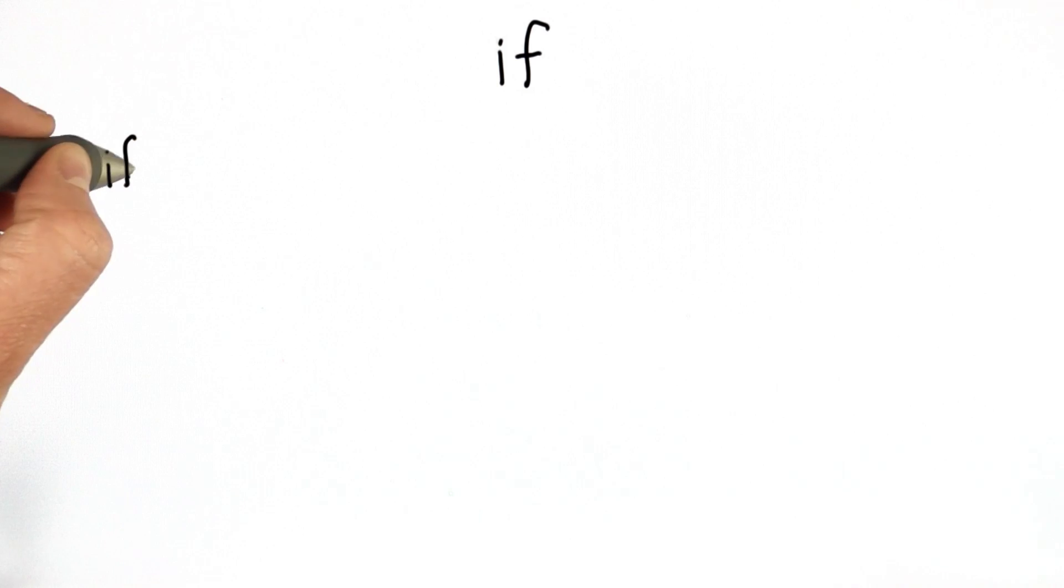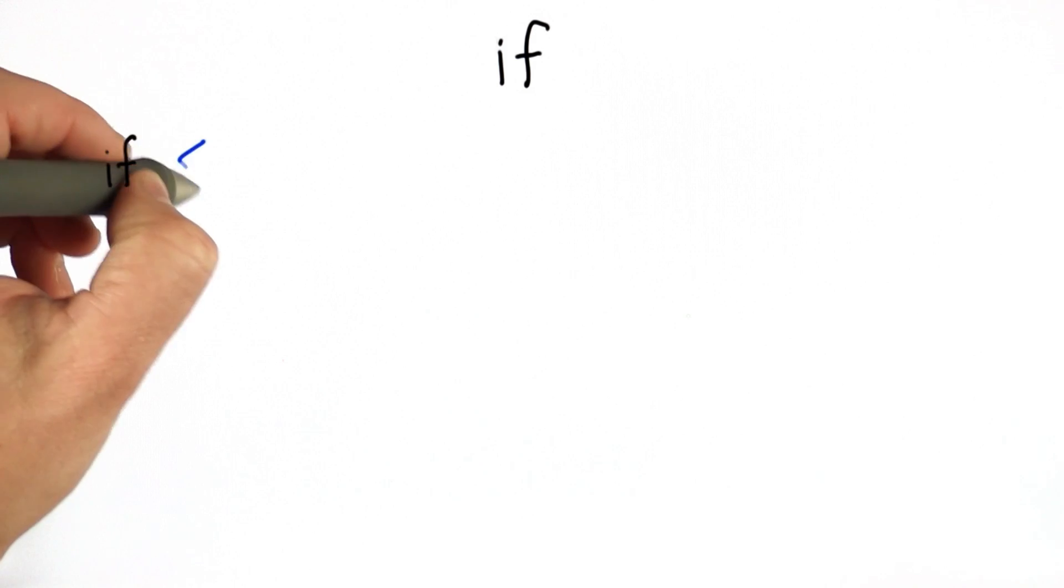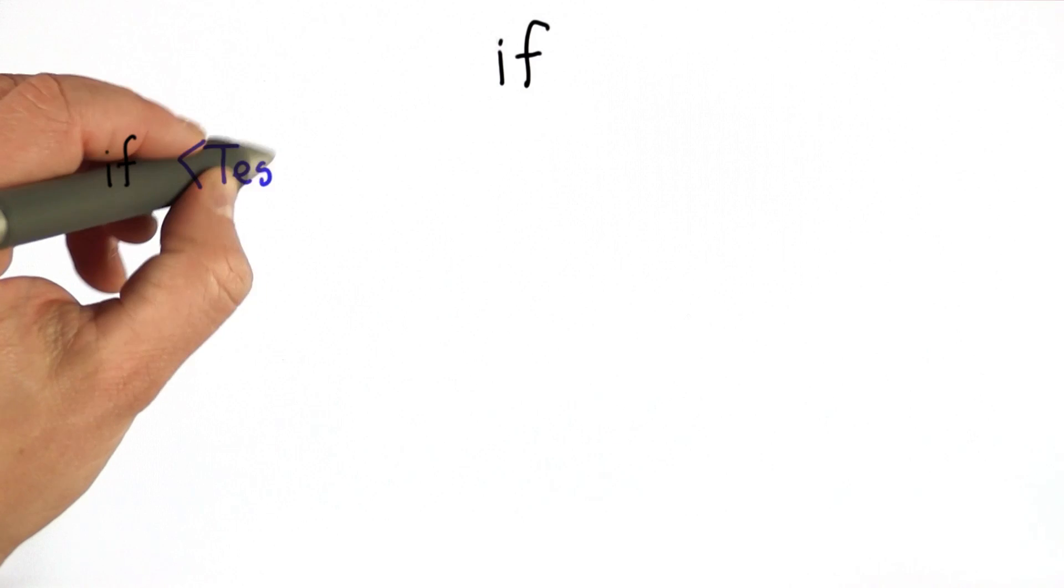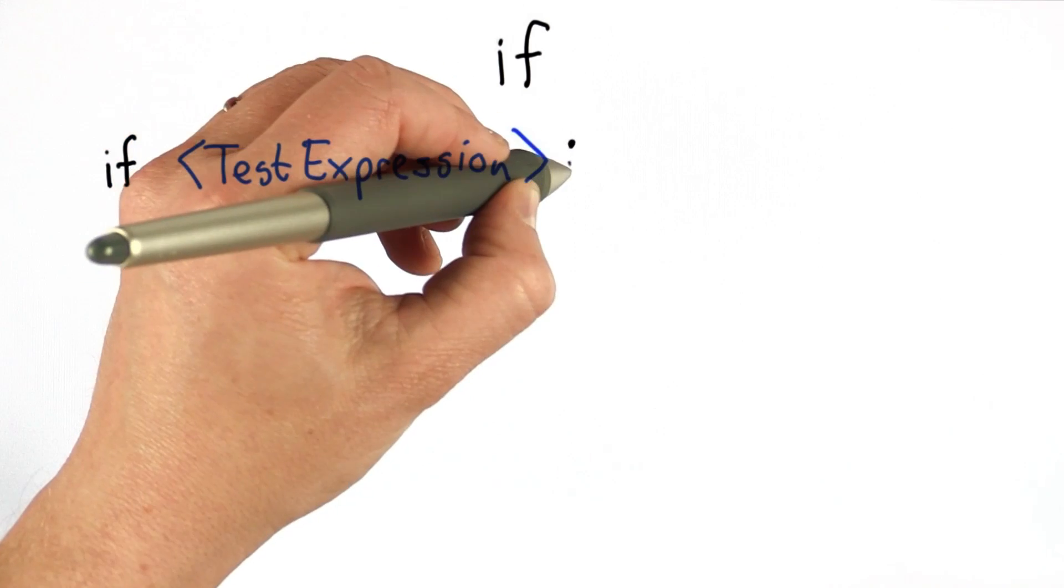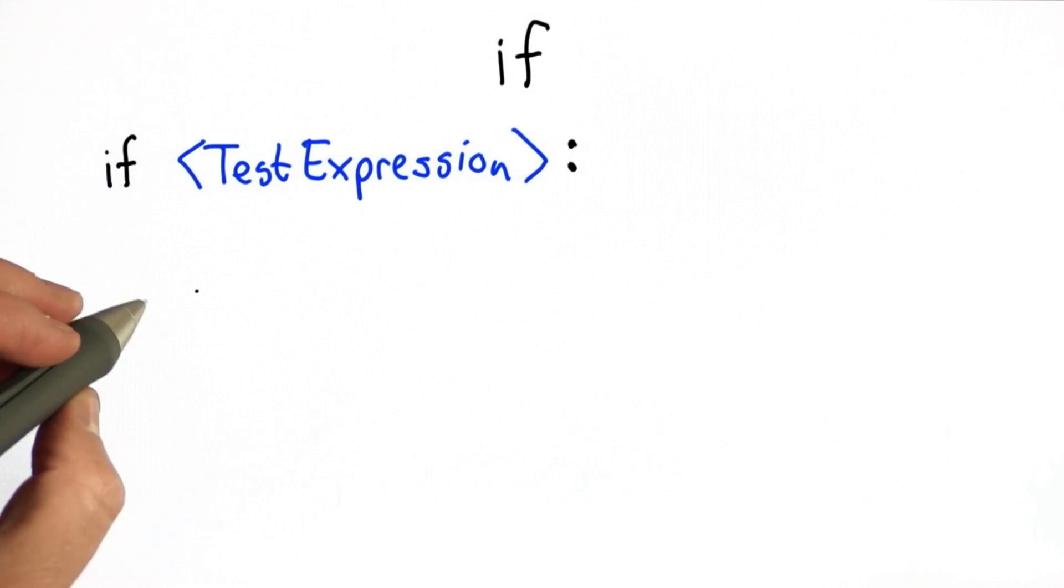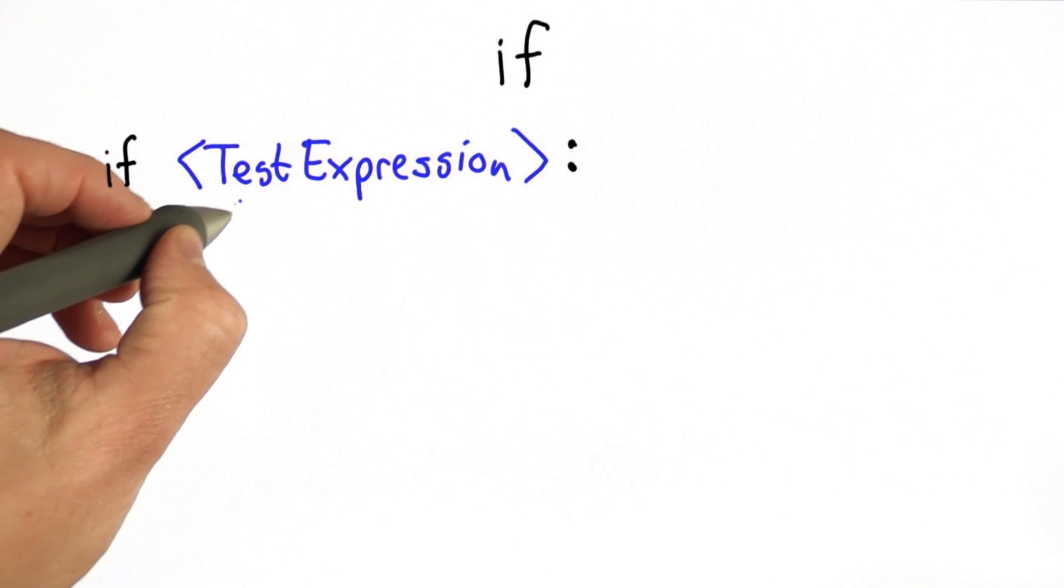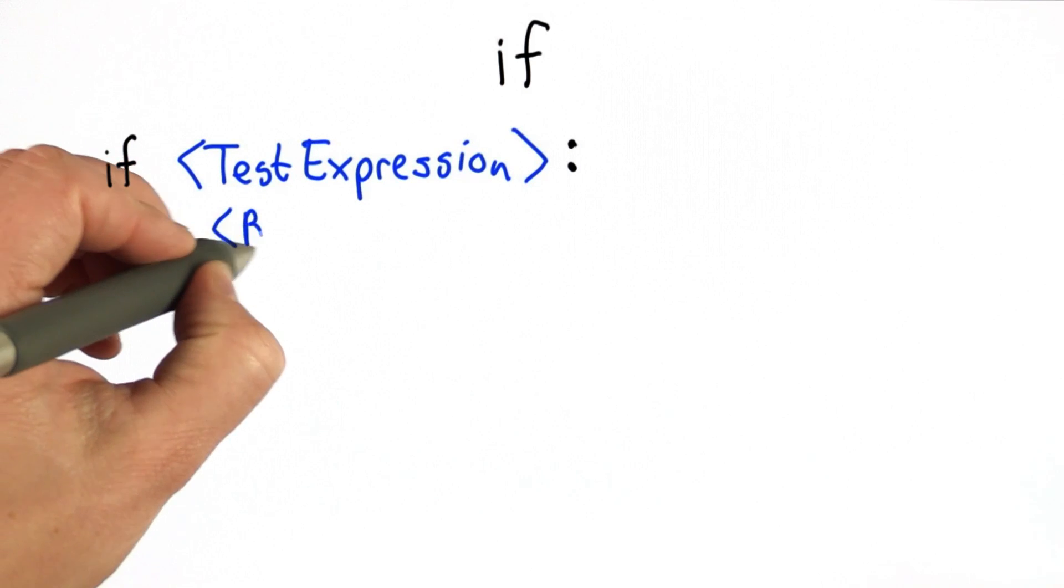The structure of an if statement is we have the keyword if, followed by a comparison. We'll call that the test expression, followed by a colon. And then inside the if, we have the block. And the block is the code that will run when the test expression is true.